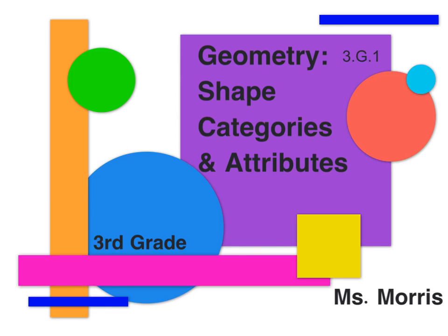For this lesson, a category a shape belongs in is simply the name of the shape. An attribute is how we would describe the shape — like, this shape has 4 sides, and this shape has no sides.